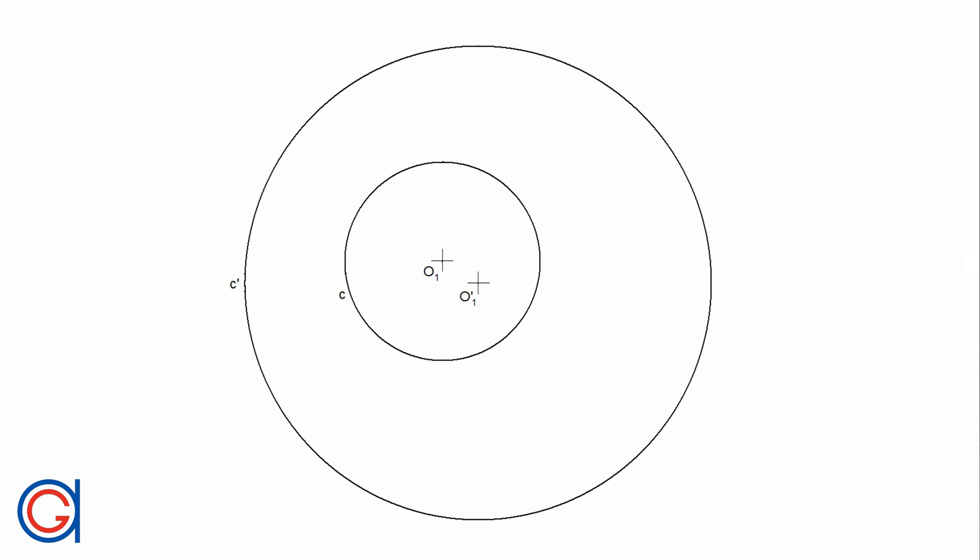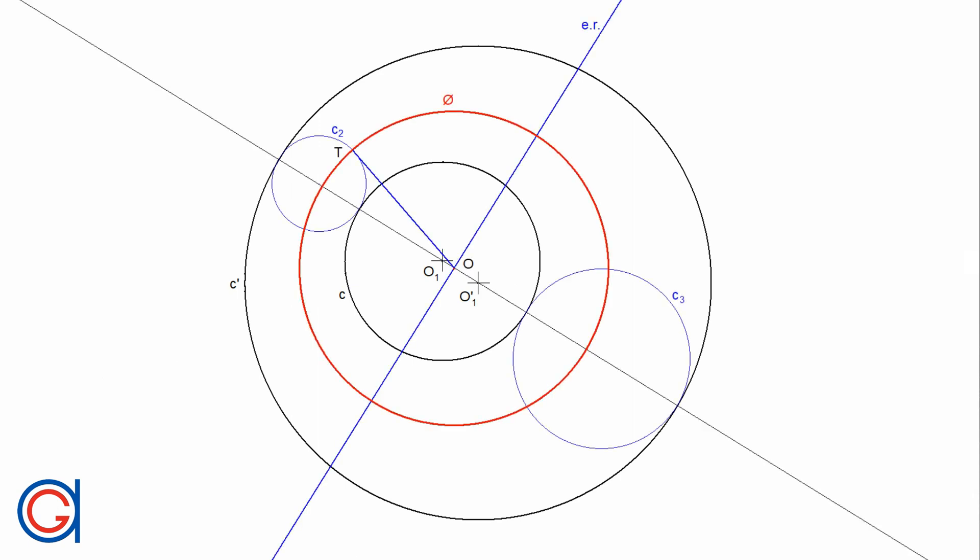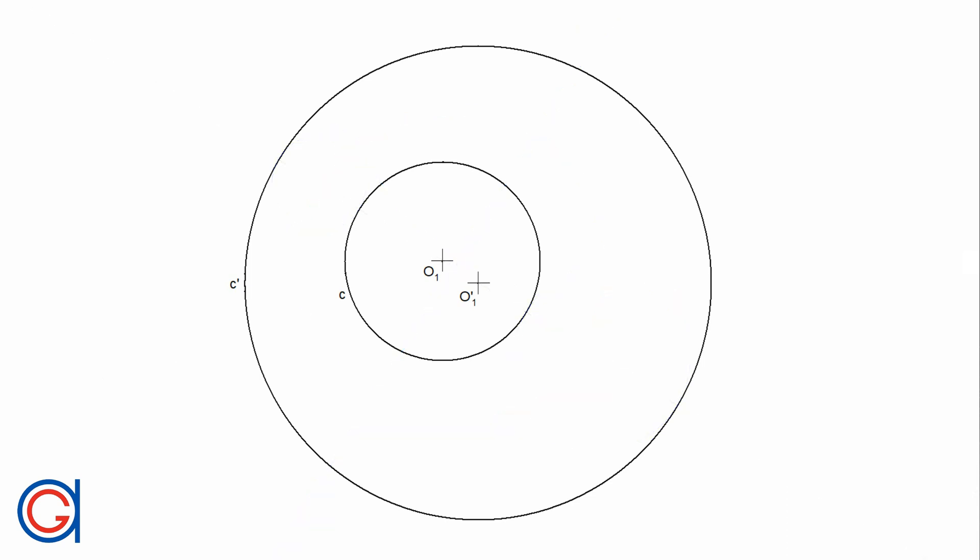Hello, today we are going to learn about mid-circles. A mid-circle of two given circles is the circle which would invert each of the two given circles into the other. The mid-circle acts like a spherical mirror, which you can see the image distorted when one of the given circles is located inside the other circle.